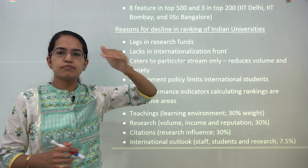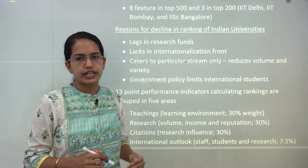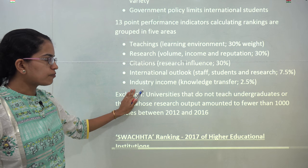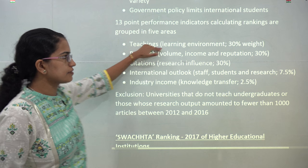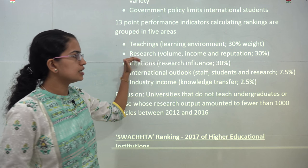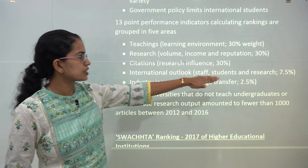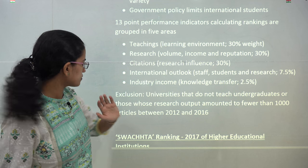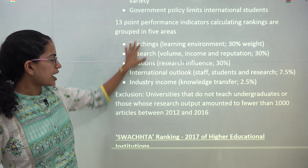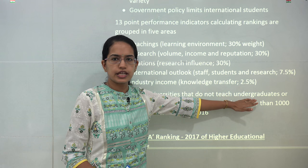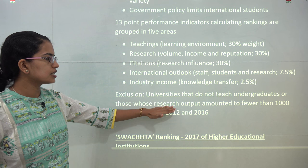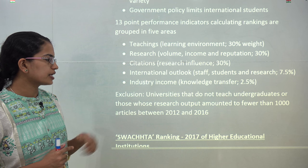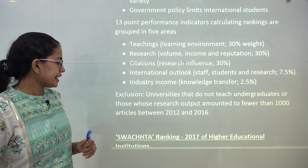Government policy limiting the intake of foreign candidates is also a factor. The ranking performance was calculated on five criteria: teaching at 30 percent weightage, research at 30 percent, citations at 30 percent, international outlook at 7.5 percent, and industrial income at 2.5 percent. Universities that do not teach undergraduate courses or whose research output is less than 1,000 articles are excluded from the listing.